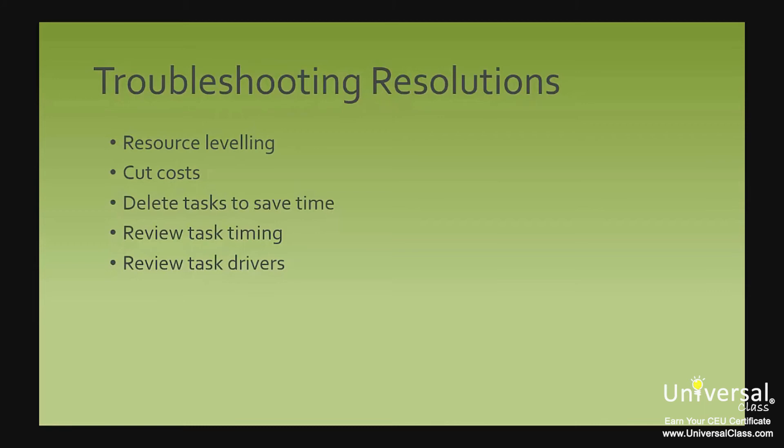Resource leveling can solve conflicts with resources that may be holding up progress. To cut costs, sort tasks by cost, concentrate on the higher-cost tasks, and trim things that are nice but not necessary. To delete tasks and save time, filter tasks by priority and remove low-priority ones. To review task timing, sort by duration with the longest tasks first. You can also review task drivers to understand why the timing for tasks is failing — reasons can include dependencies and constraints.